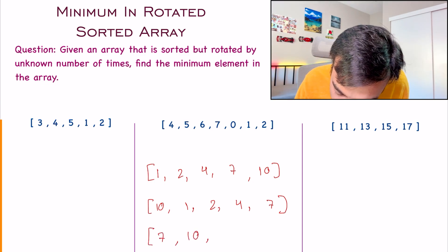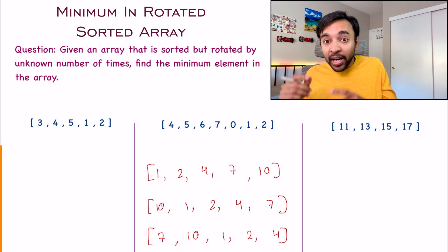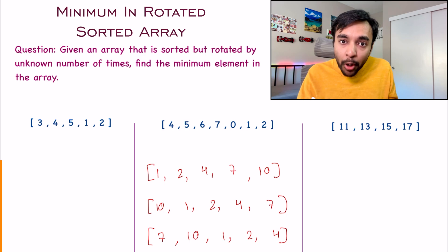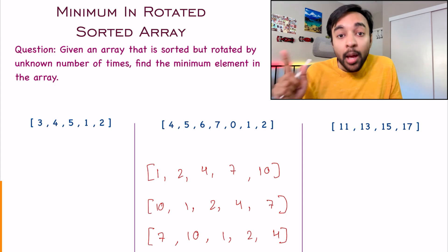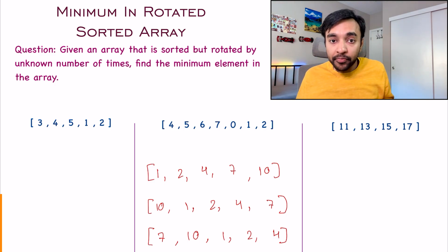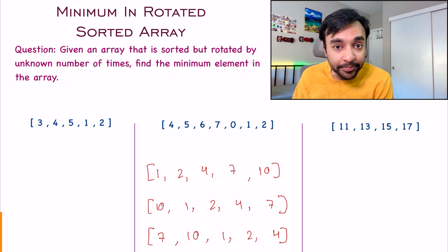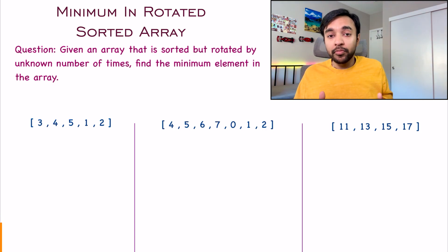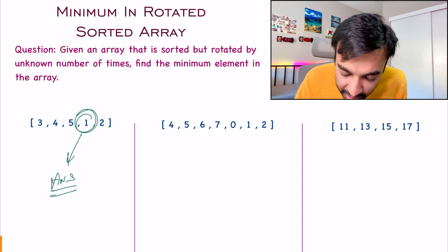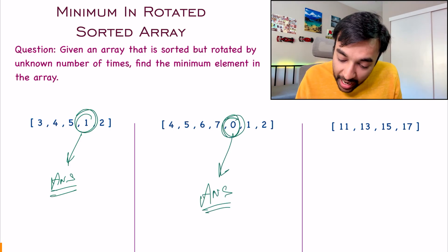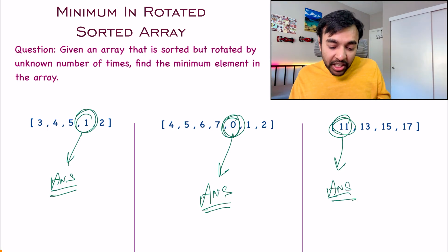After two rotations, all elements once again shift by one space. So this is the problem statement — the array is already sorted but rotated some number of times. Given these test cases, you have to find the minimum element present in the array. For the first test case, one is the minimum element. For the second test case, zero is the minimum element. And in the third test case, 11 is the minimum element and that will be your answer.